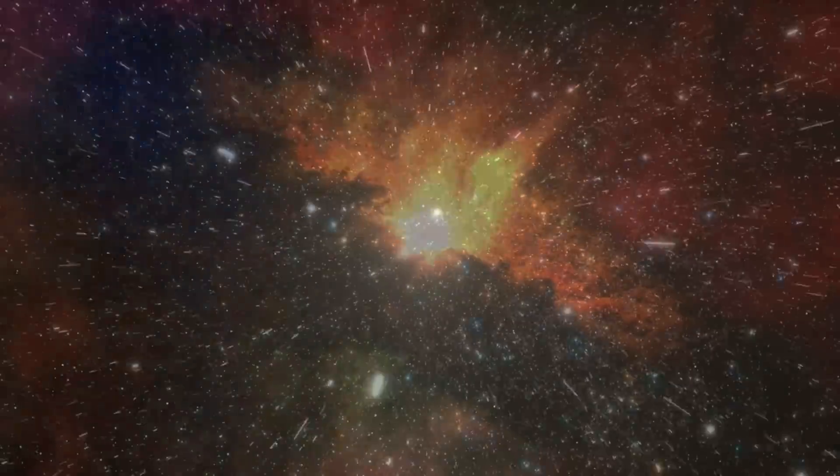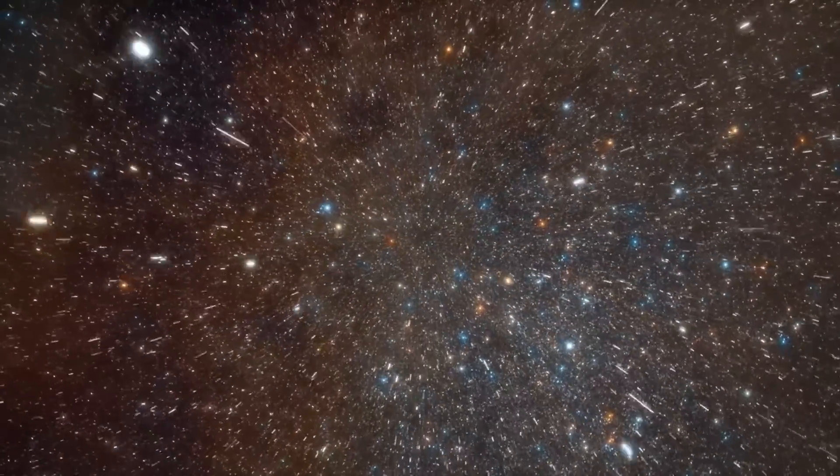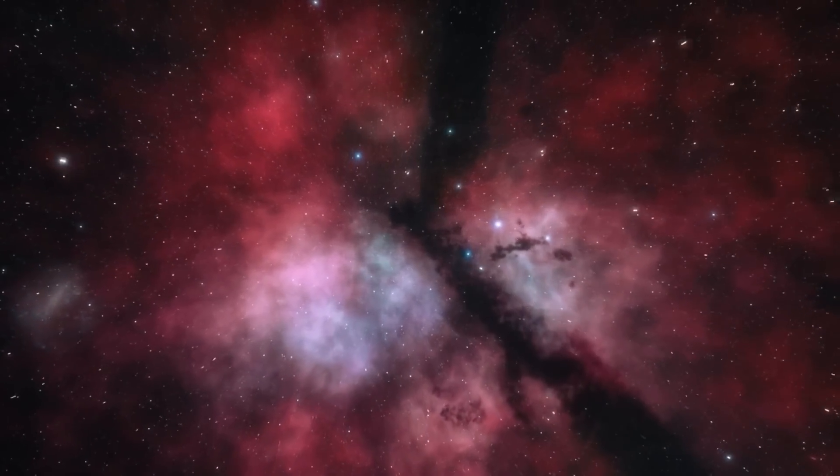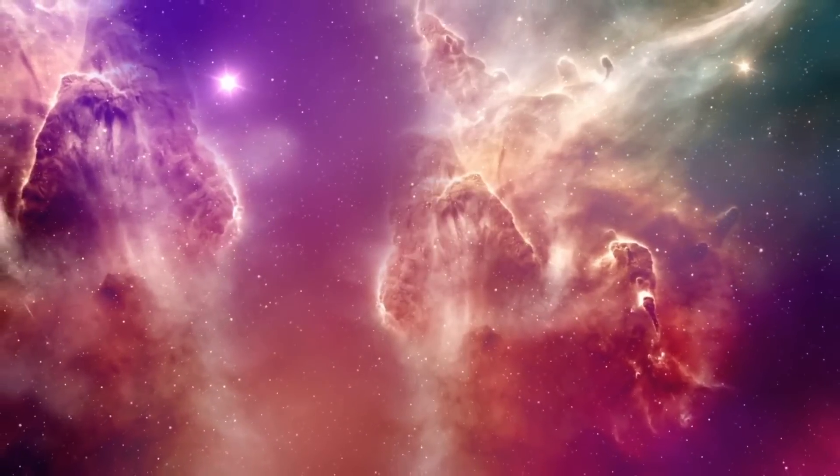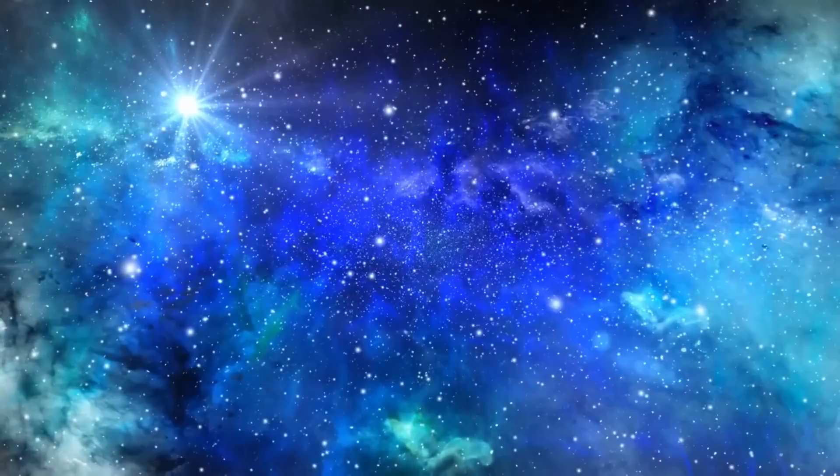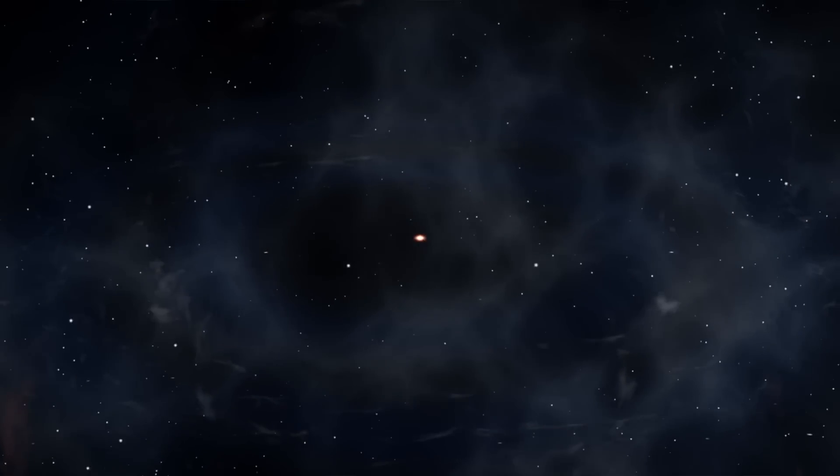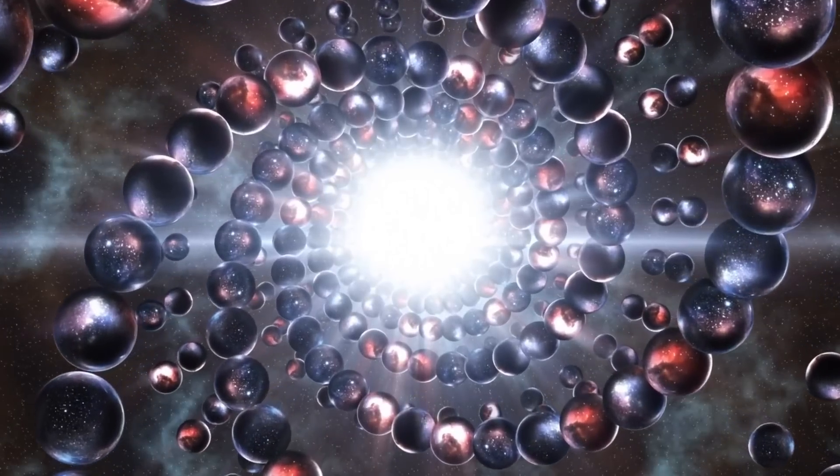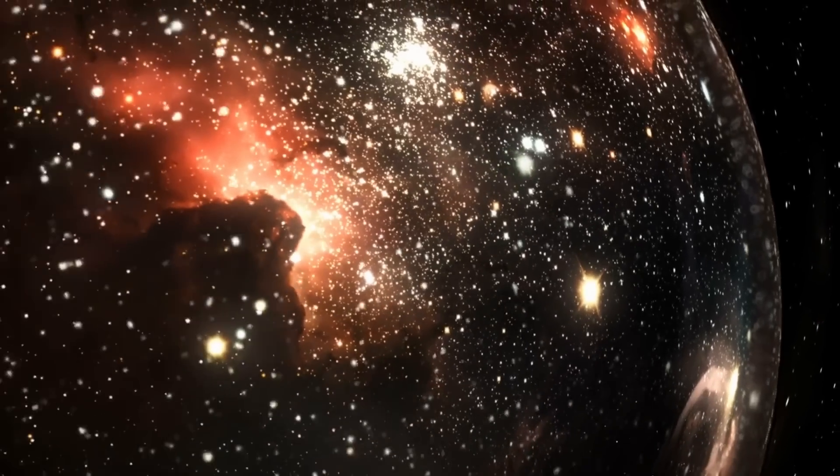That theory has an extension called eternal inflation, which is that the inflation essentially goes on forever and it just stops in little patches. You imagine the fabric of the universe, space time, stretch, stretch, stretch. And then it slows down and stops in little patches. And each one of those patches is basically a big bang and a universe of which ours is one. So you end up with this picture of an infinite fractal universe of basically an infinite number of big bangs. And that's called the inflationary multiverse.